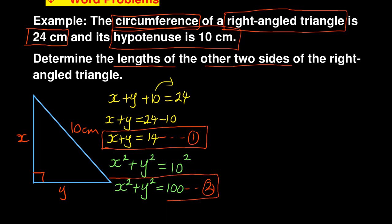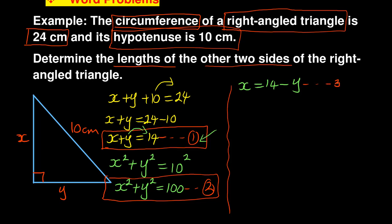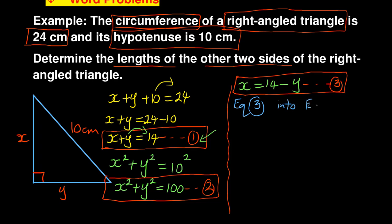So you can see I have got two equations which I must solve. From equation one I can derive another equation: if I take y to the other side, x equals 14 minus y. This becomes my equation three. Remember, this is now a simultaneous equation that I'm solving. I'm going to substitute equation three into equation two.